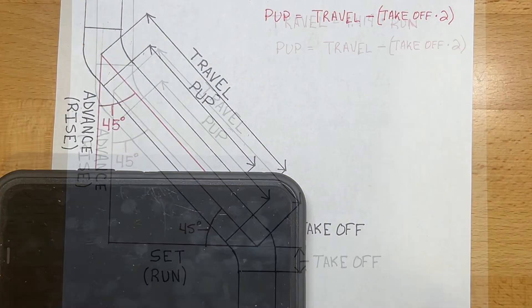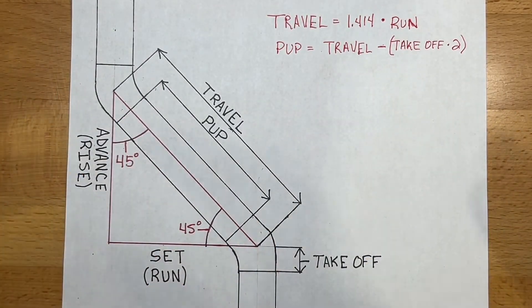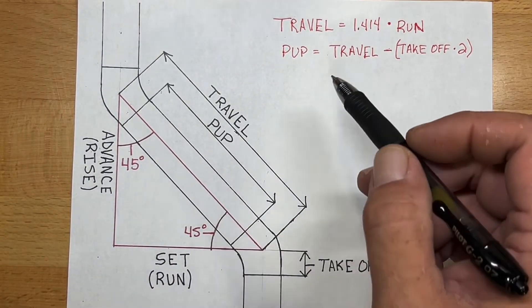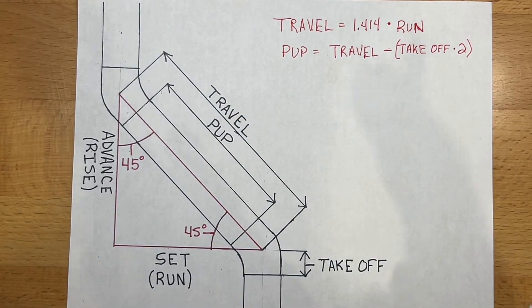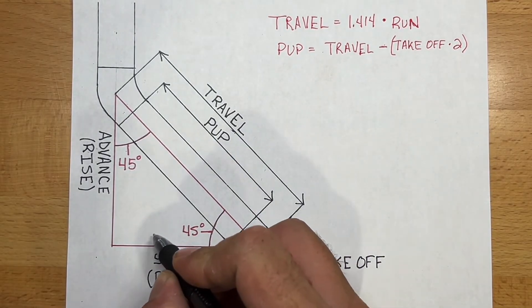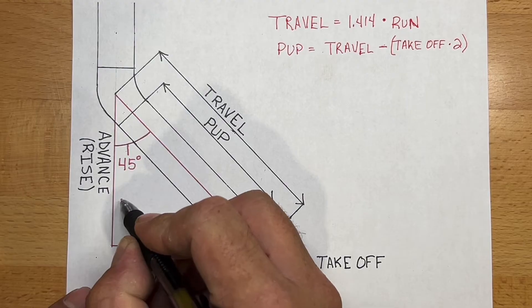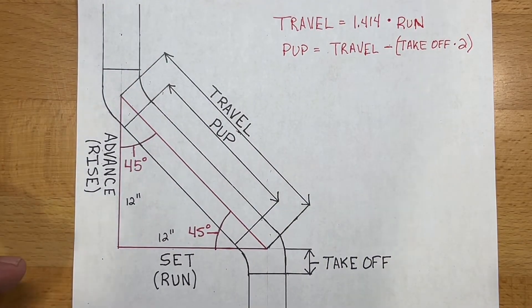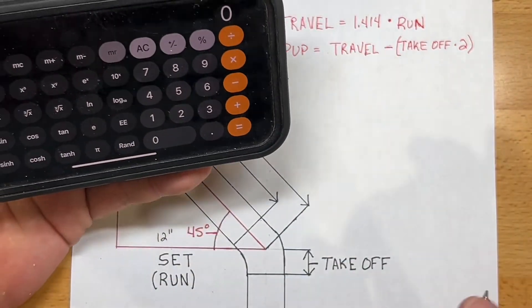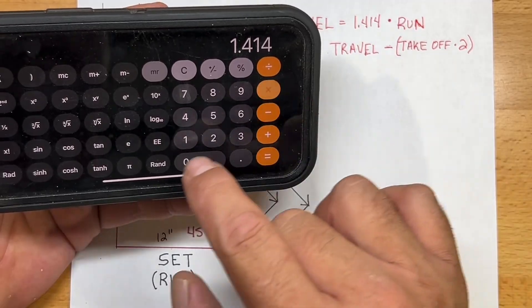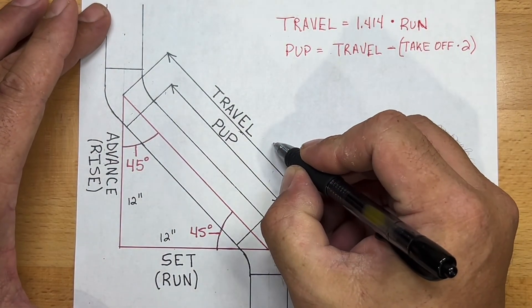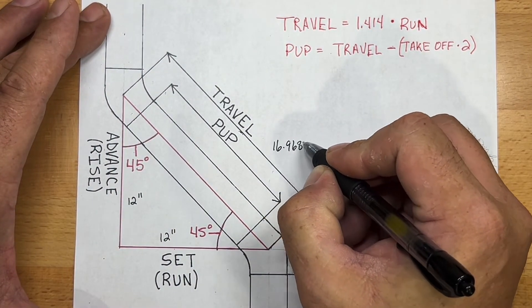Okay. Now that we know where those constants come from and how you derive those particular numbers, let's figure out what our length is going to be here. And then we're going to have to figure out what the pup length is because the travel and the pup are different. So in our example, our set is going to be 12 inches. Our advance is going to be 12 inches. So in order to get the formula or get the length of the travel for that triangle, then we'll go 1.414 times 12 and that will get 16.968. So our travel is 16.968 inches.